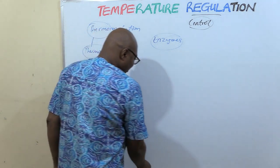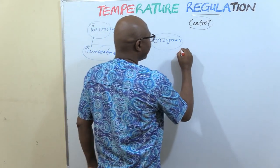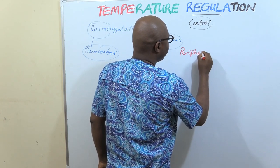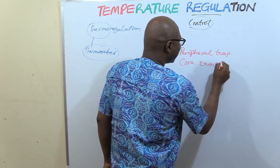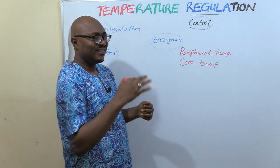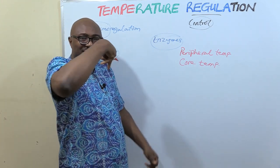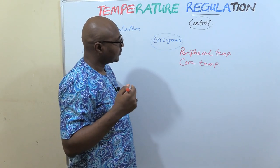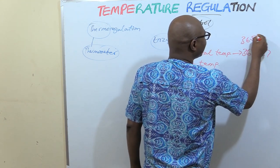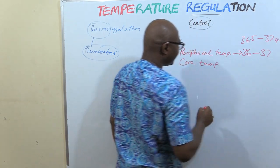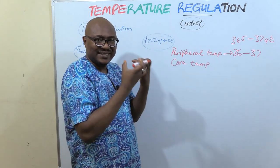When you are measuring temperature, there are different places you can use. We have peripheral temperature and we have core temperature. Peripheral temperature — when you use a thermometer and put it in your armpit or in your mouth — those are peripheral measurements; they are not measuring the real temperature inside the body. Peripheral temperature is around 36 to 37 degrees centigrade, or more specifically 36.5 degrees centigrade.